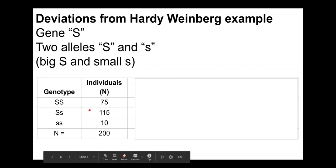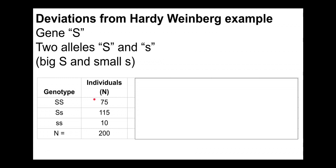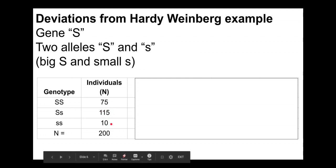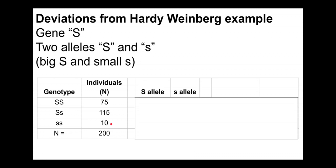We went into a population, took blood samples, and determined the genotype of 200 individuals. 75 were homozygous dominant (big S big S) with normal red blood cells, 115 were heterozygous (big S little s), and 10 were little s little s individuals with sickle cell anemia. We can look at these genotype frequencies and break them down to determine the frequencies of the alleles.